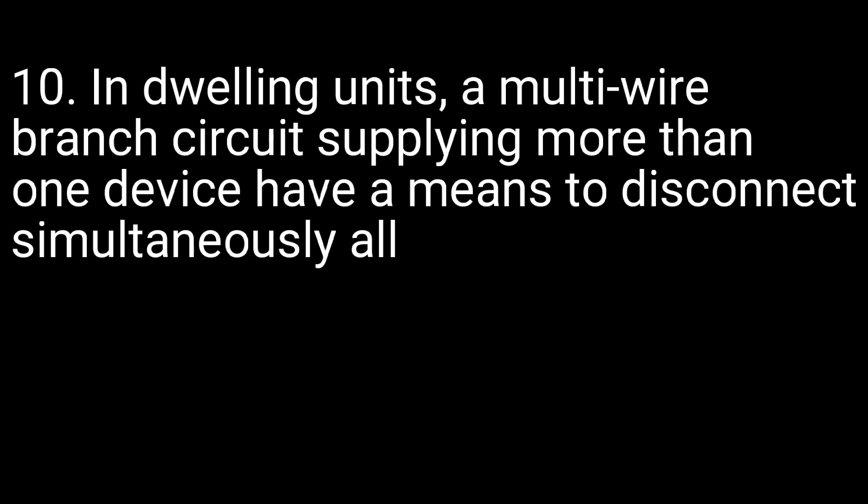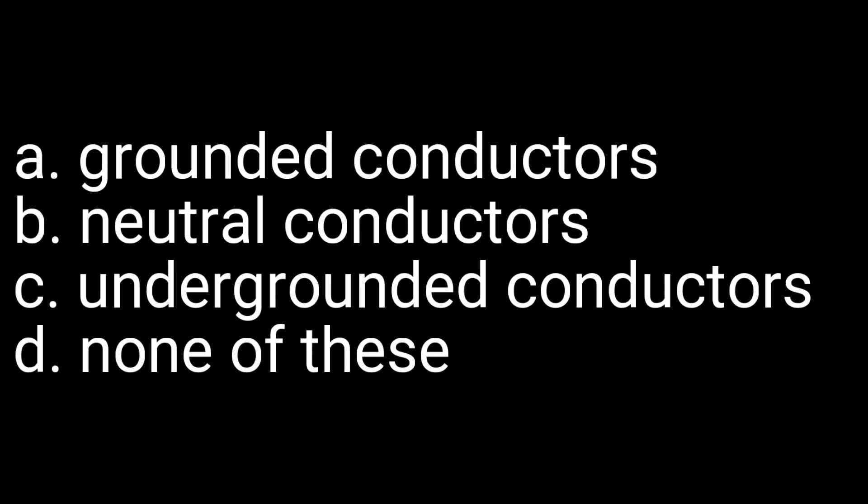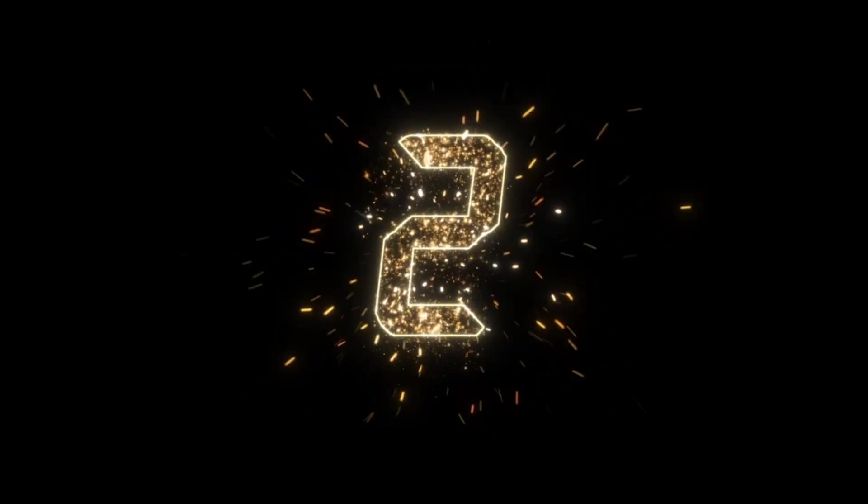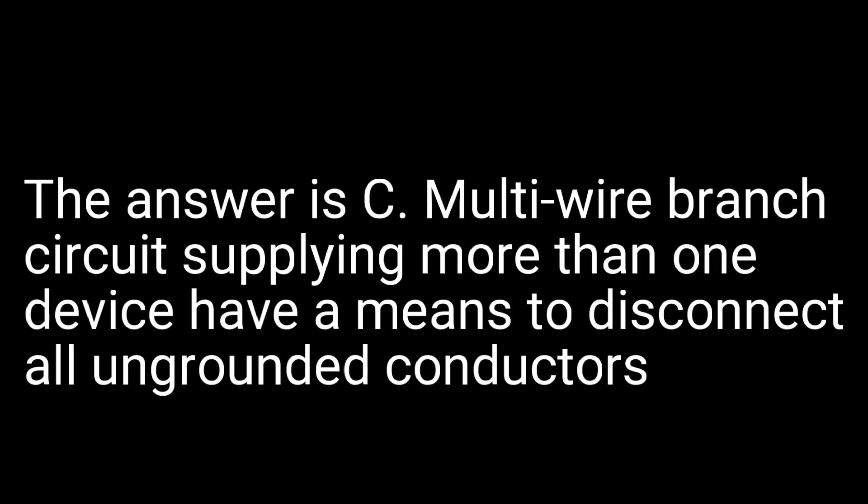Question 10. In dwelling units, a multi-wire branch circuit supplying more than one device shall have a means to disconnect simultaneously all: A. Grounded conductors. B. Neutral conductors. C. Ungrounded conductors. D. None of these. The answer is C. Multi-wire branch circuits supplying more than one device shall have a means to disconnect all ungrounded conductors.